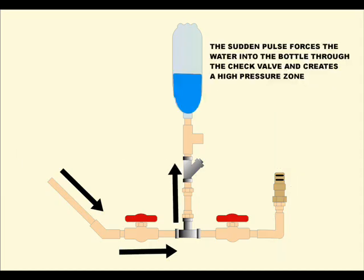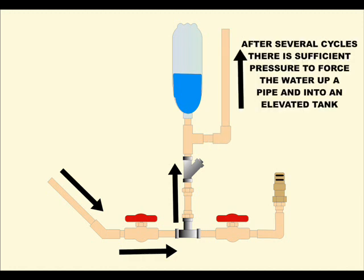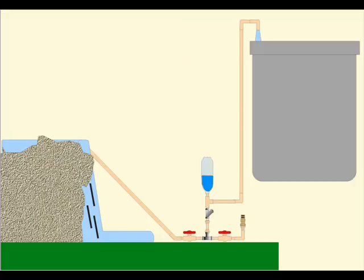The sudden pulse forces the water into the bottle through the check valve and creates a high pressure zone. After several cycles there is sufficient pressure to force the water from the bottle to go up a pipe into an elevated water tank.